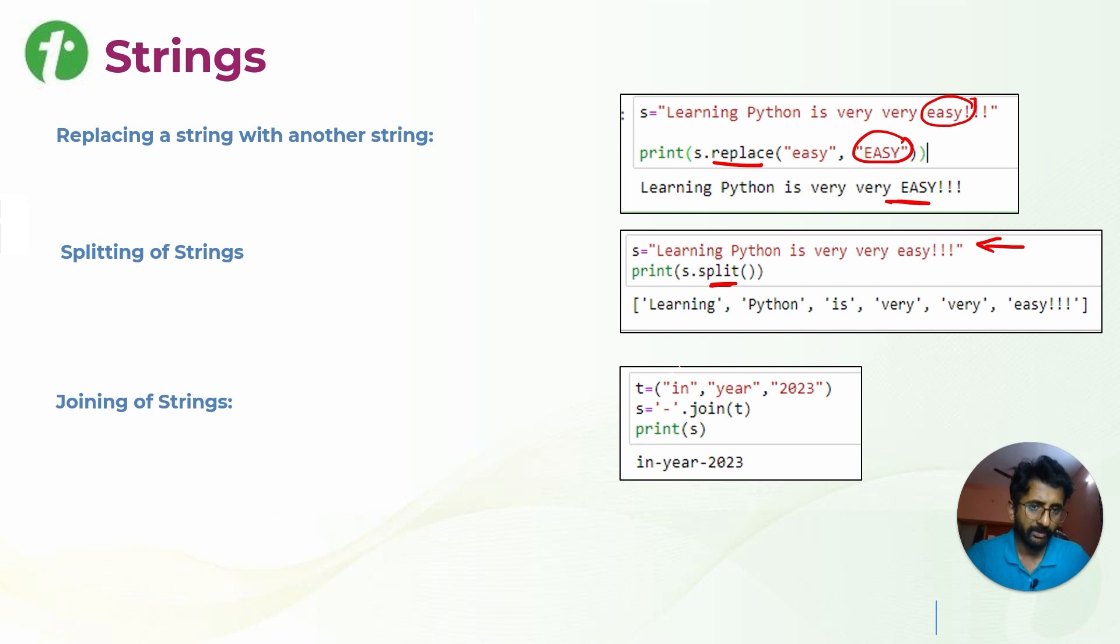For example, this particular variable is having the tuple of these three values. Whenever you wanted to join all these elements, you can do it by dot join method. What you are joining, this particular variable, all elements inside this variable you are joining. With what you wanted to join, in single quotes you can give, like dash, whatever you are giving as input to dot join method. So this is your output.